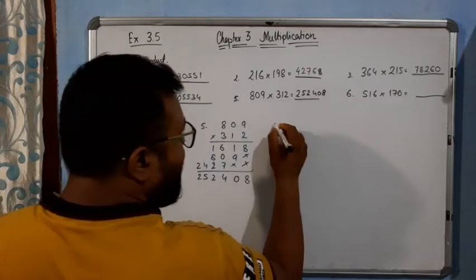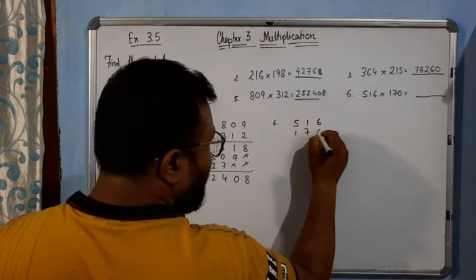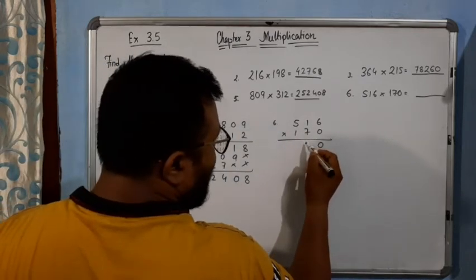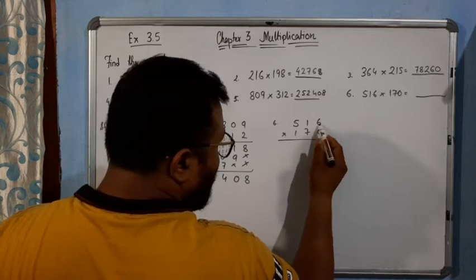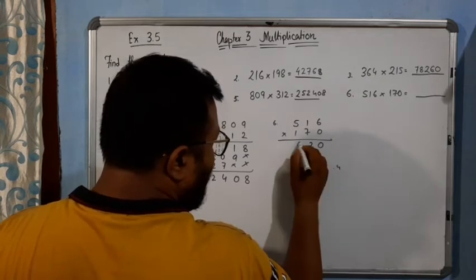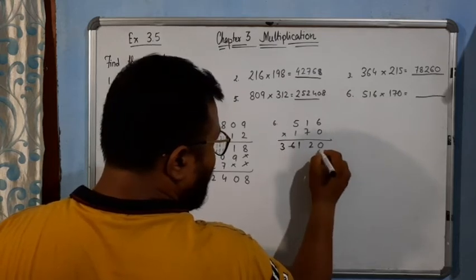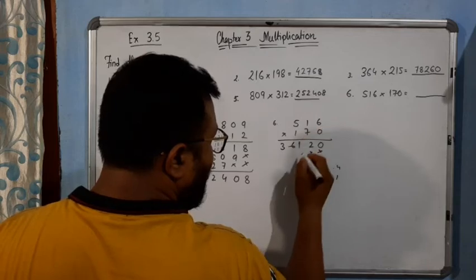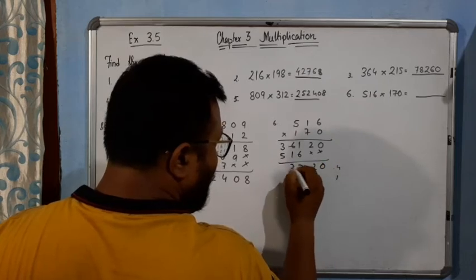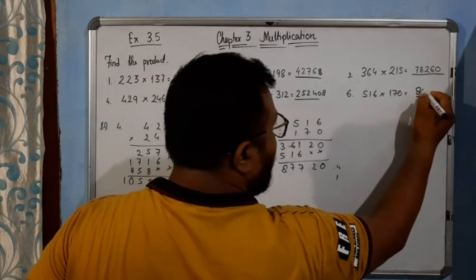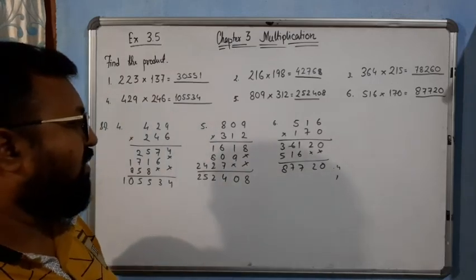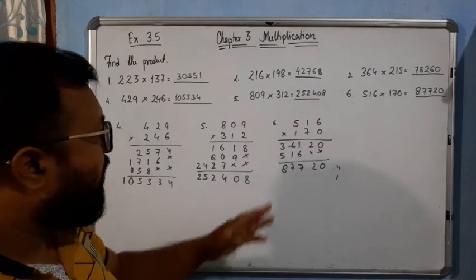Now come to the last question 6 here: 516 multiplied by 170. Multiply by 0, it will be 0. Now directly start with the 7. 7 times 6 is 42, write 2 carry 4. 7 times 1 is 7, 11. Write 1, carry 1. 7 times 5 is 35, 36. Cross. Then 1 times 6 is 6, 1 times 1 is 1, 1 times 5 is 5. Adding: 0, 2, 7, 7, 8. So the answer is 87720.